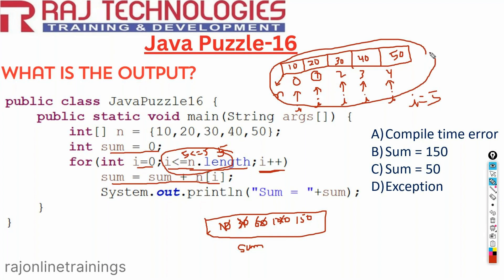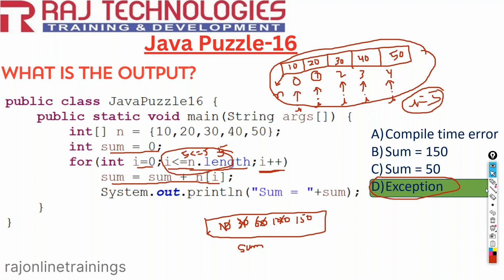What is n of 5 in this array? Do you have an index 5? The indexes are from 0 to 4 only, but the index is now 5. Since there is no index 5 in this array, it is out of bounds. In Java, if you are accessing an array which is out of index, it throws an exception. So the correct output for this program is option D — it is going to throw an ArrayIndexOutOfBoundsException. We need to observe this equal to symbol here — 5 less than or equal to 5 is true, so n of 5 is accessed, which is out of index, and that is the reason we get ArrayIndexOutOfBoundsException.